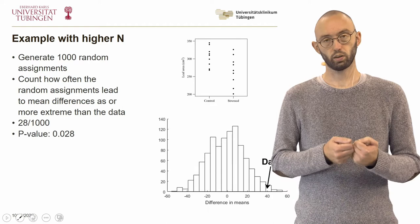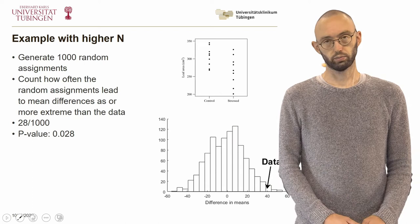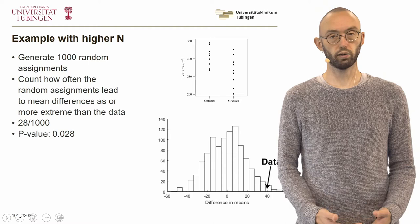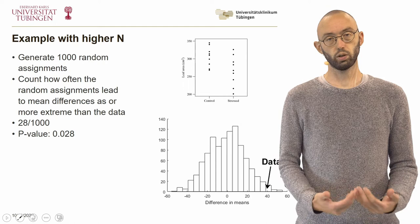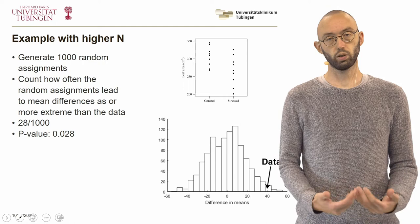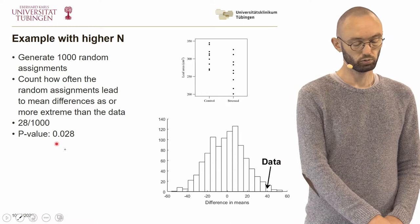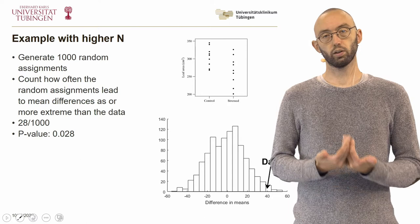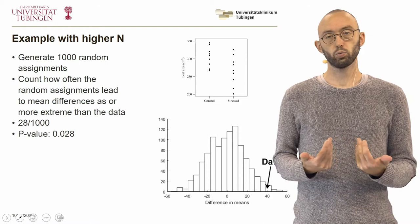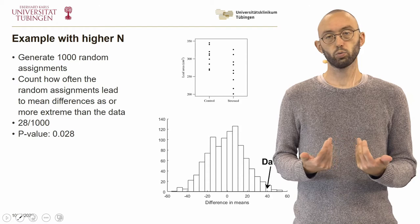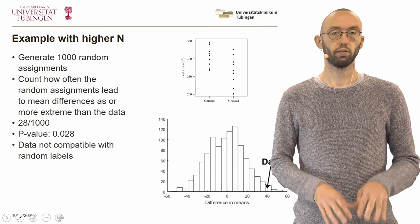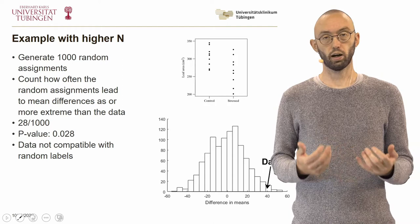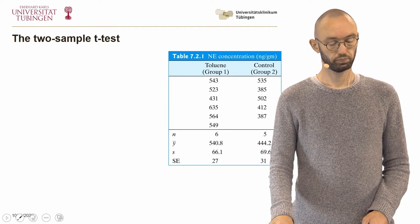If we do that, we can look at a histogram of the distribution of the test statistic given the null hypothesis is true and compare it to the data. In our case, only 28 of all random permutations result in a mean difference larger than observed, giving a p-value of 0.028. So assuming the null hypothesis is true, it is very unlikely to observe a mean difference as large or larger in magnitude. We conclude the data is not compatible with random labels, and the difference in mean leaf area between the two groups is statistically significant — larger than what can be reasonably expected by chance.